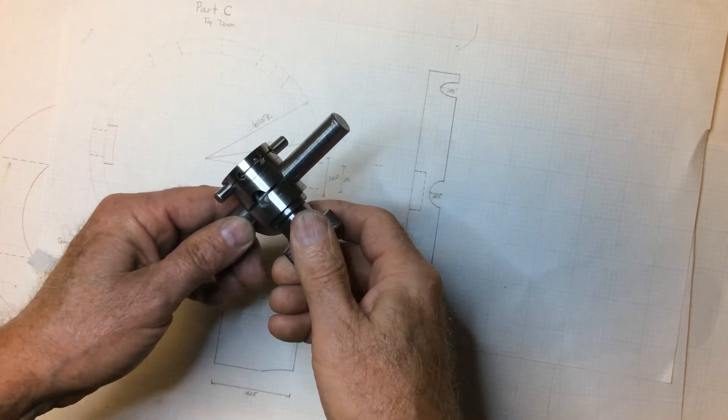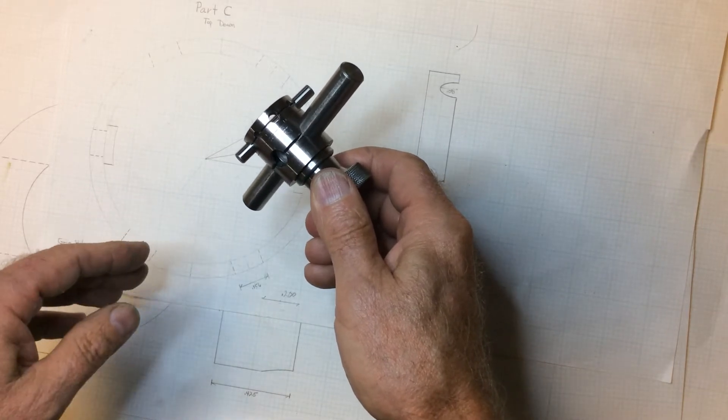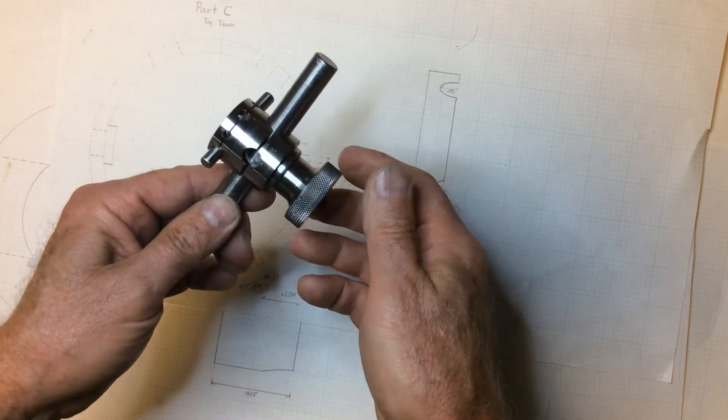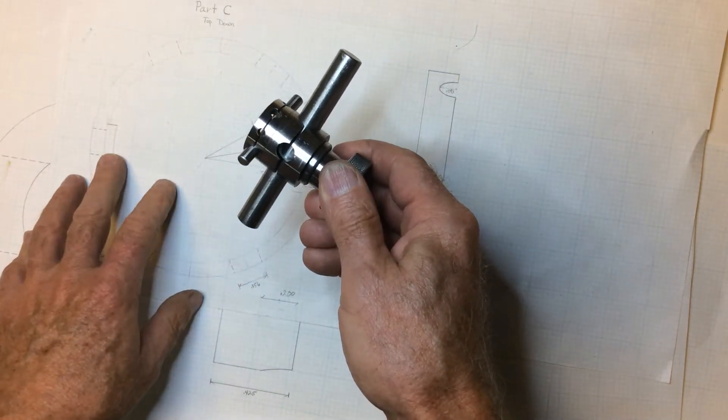A while back I became interested in making a snug for metrology purposes, very similar to the Starrett 57S snug.